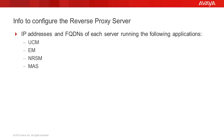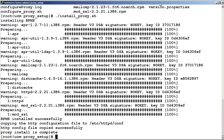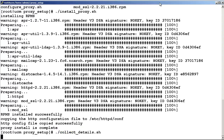Now, before we configure the reverse proxy server, we need to collect the IP addresses and fully qualified domain names of each server running the UCM, EM, NRSM, and MAS. Once you have collected this info, run the collect_details shell script again as root.